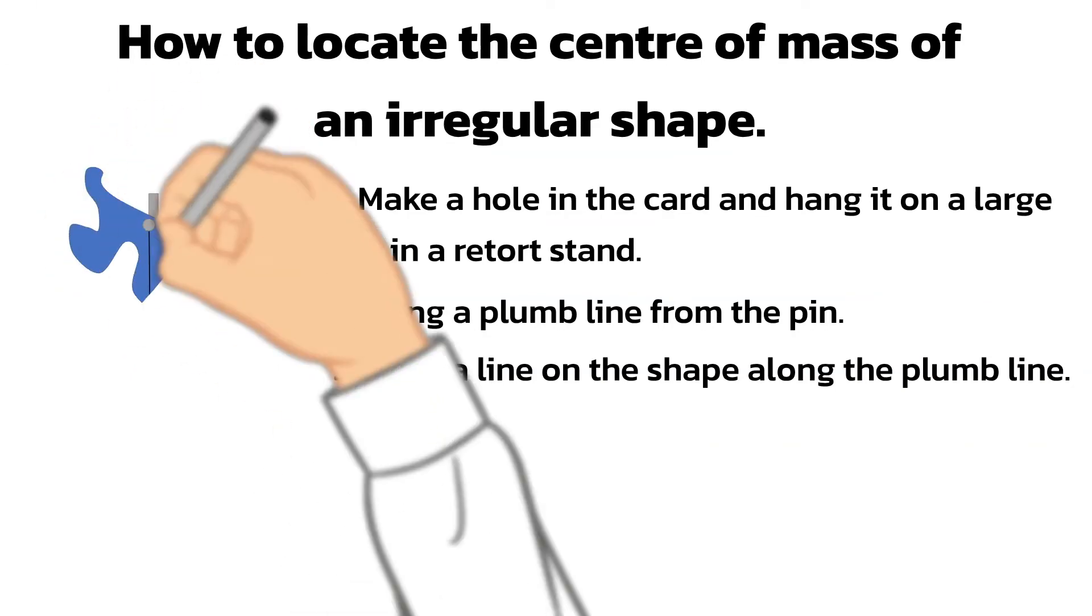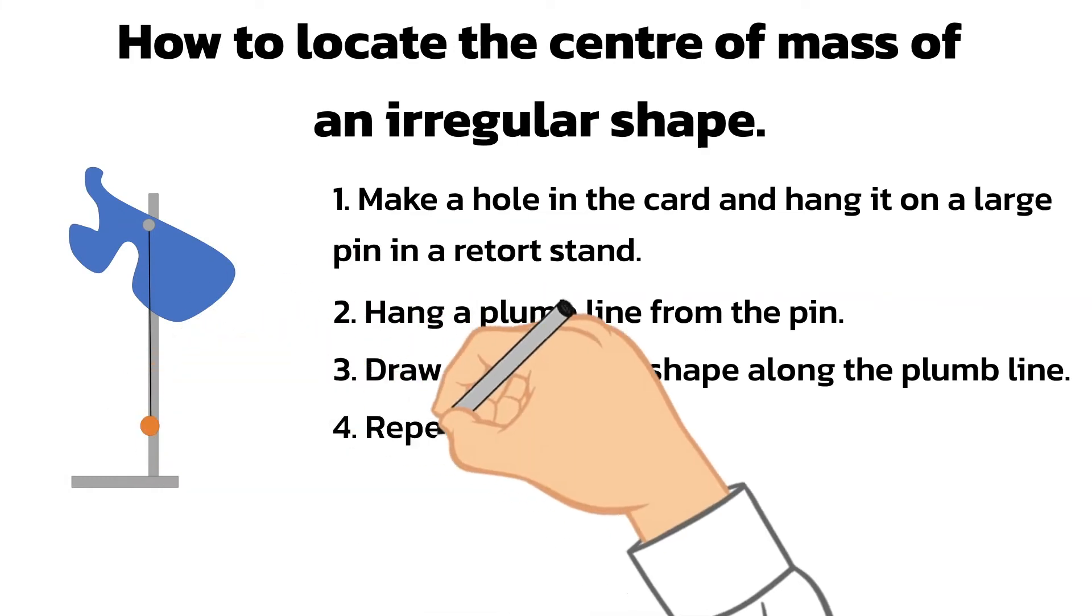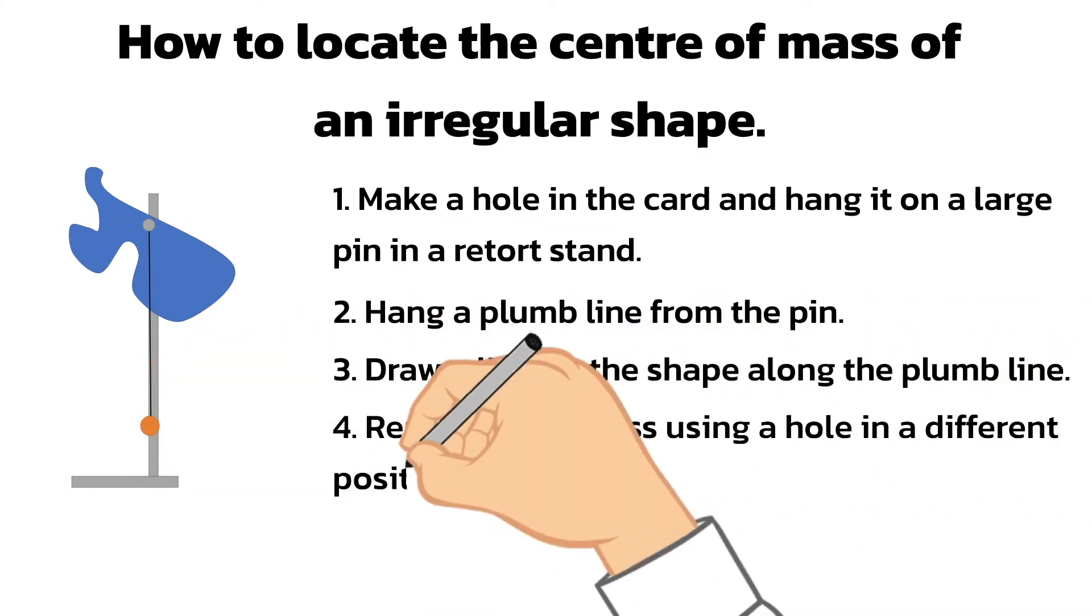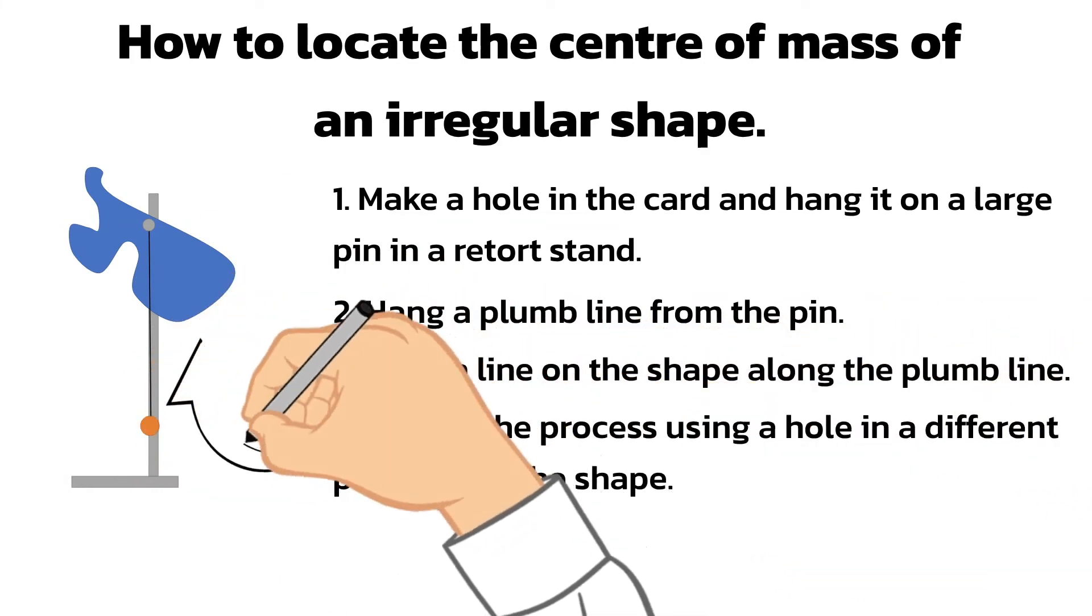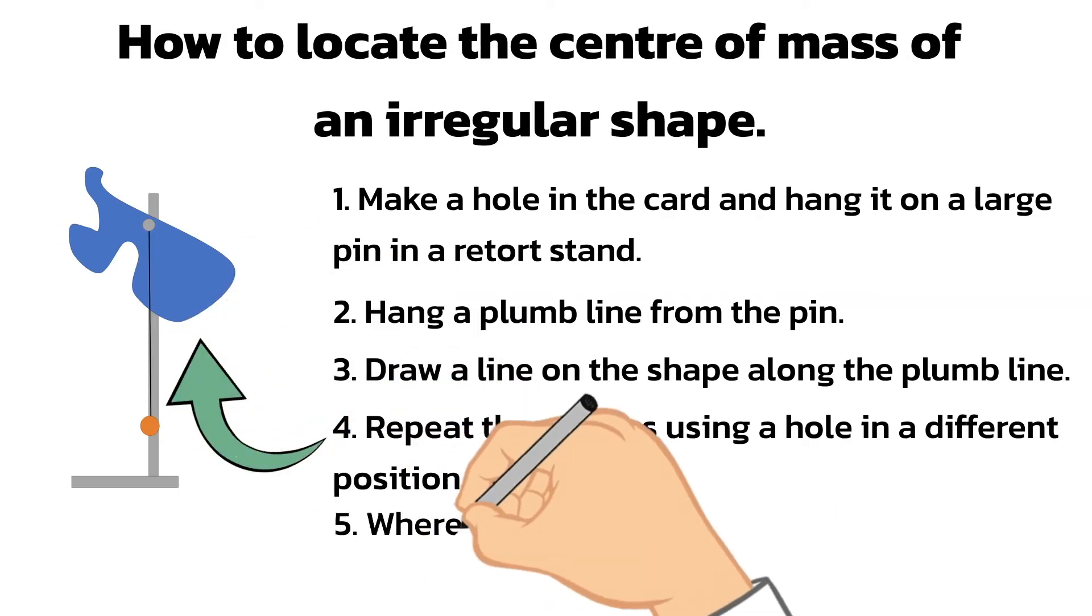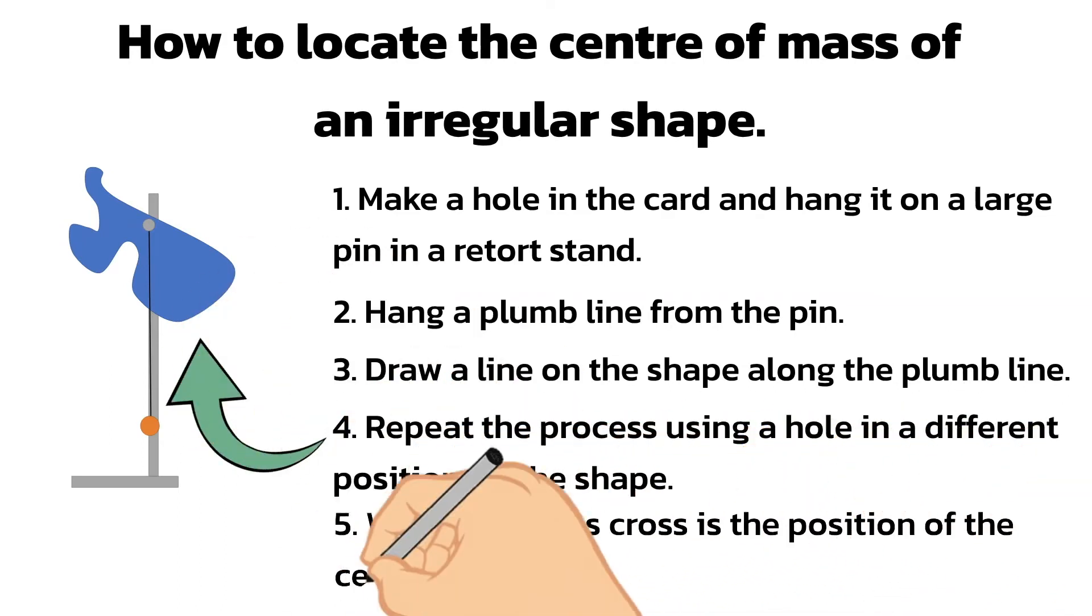Now repeat the process using a hole in a different position on the shape, as shown. Once you've drawn the second line, where the lines cross marks the position of the center of mass of the shape.